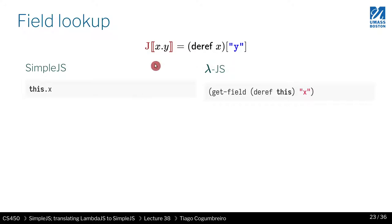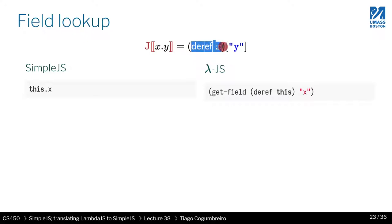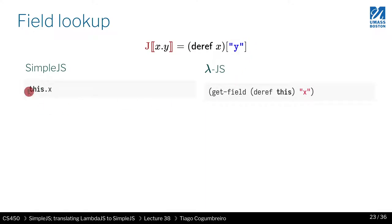In your PDF you're going to find this rule. What it's saying is that when you want to translate x.y, this is the result you want to generate — the right-hand side is the generated code. So whenever you see x.y, what you have to do is first do a deref of x. The result is going to be an object, and then with that object you do a lookup of field y.